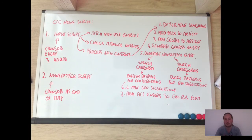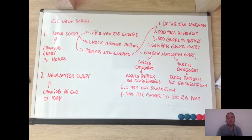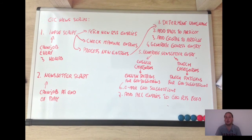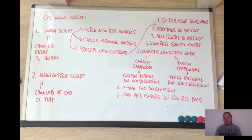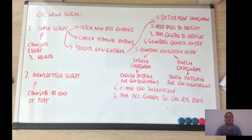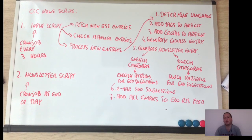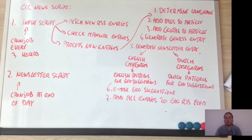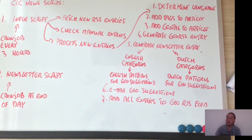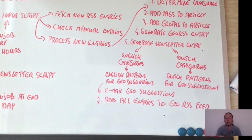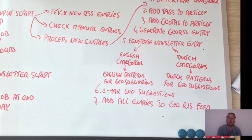Fourth, the script generates an entry for the geo RSS feed. Fifth, it generates an entry for the newsletter, but before generating that entry it first determines if the article is in Dutch or English language — which was already determined in the first step.